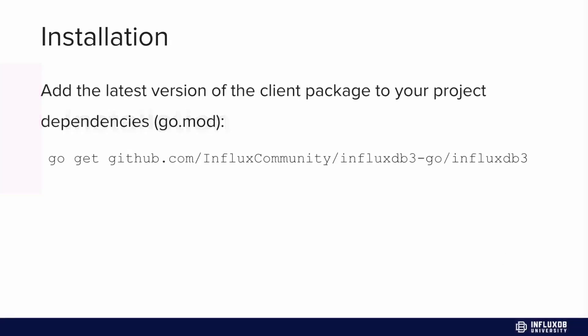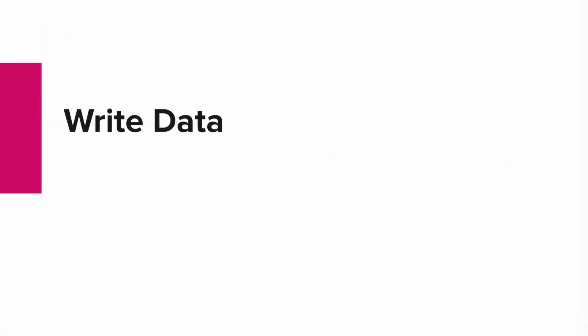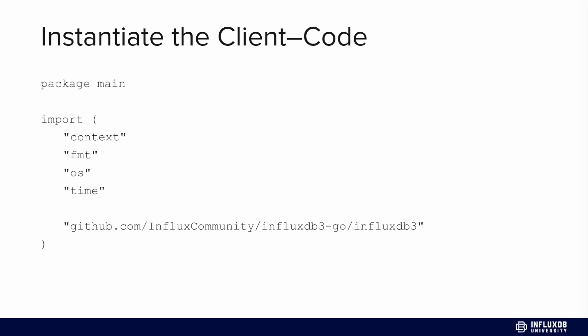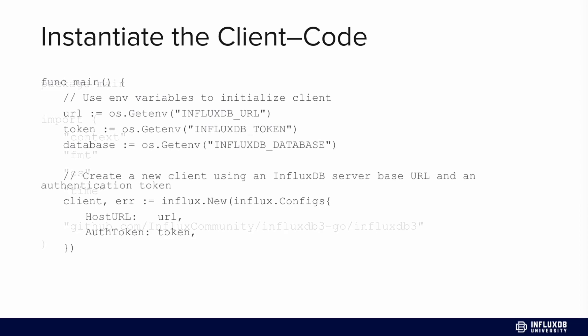Now let's talk about installation. You'll want to add the latest version of the client package to your project dependency in order to use it. To write data, you'll want to import your packages and then instantiate or initialize the client and write and query InfluxDB v3 by providing that token and that database. Here we're importing our packages, then we get our InfluxDB URL, our token and our database using environment variables to initialize the client, and then we create a new client with the InfluxDB server base URL and that authentication token.